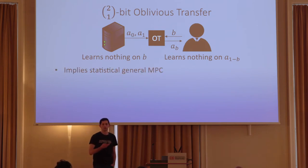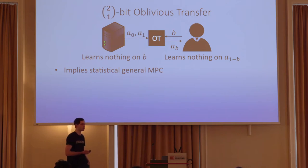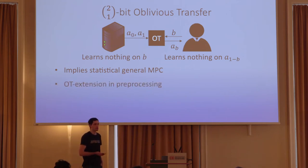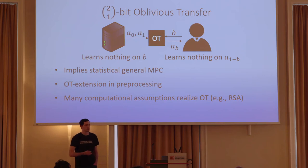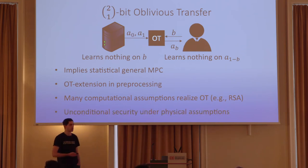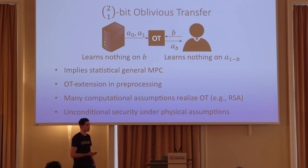Oblivious transfer is used in many MPC protocols and generally implies statistically secure MPC protocols. We know that we can compute it very efficiently using OT extension, which can also be done in preprocessing time. Many computational assumptions realize OT, and we even know that physical assumptions can be used to construct OT with unconditional security.